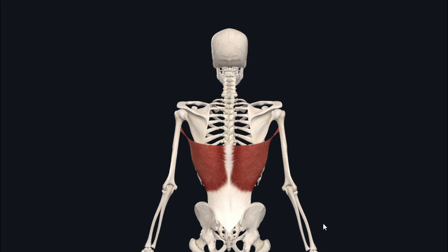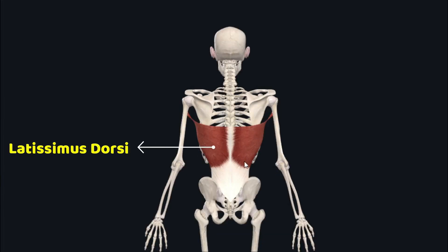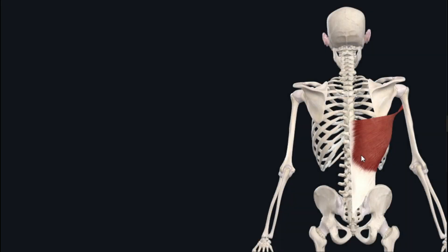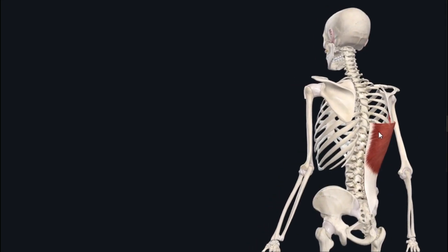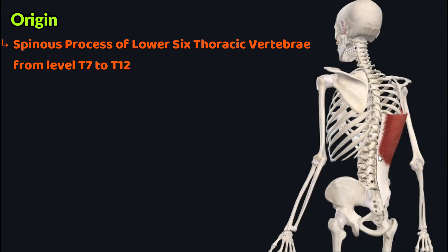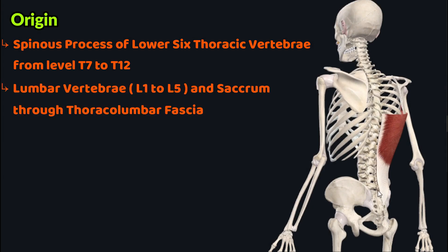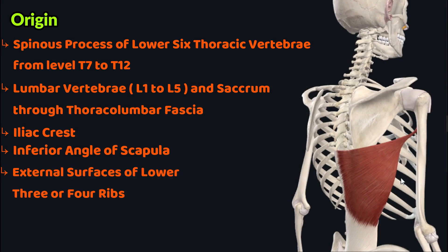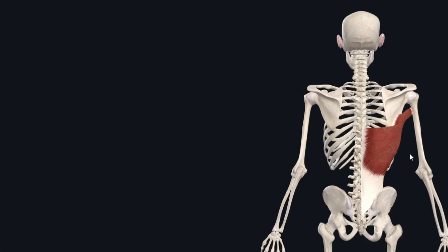The latissimus dorsi muscle is a large fan-shaped muscle partially covered by the trapezius. It has a wide range of origin: from the spinous processes of the lower six thoracic vertebrae (T7 to T12), from the lumbar vertebrae and sacrum through the thoracolumbar fascia, from the iliac crest, the inferior angle of the scapula, and the external surfaces of the lower three or four ribs.